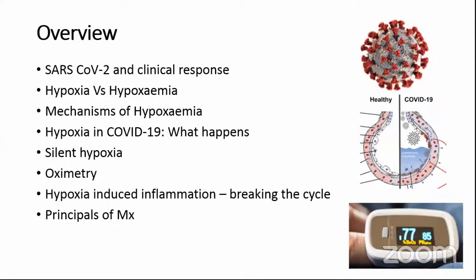Today we'll cover the mechanism of hypoxemia in COVID-19, why patients develop hypoxia, a bit about hyaline hypoxia — one of the most important topics discussed and one of the most important killers in COVID-19 patients. We'll also touch on the principle behind oximetry, hypoxia-induced inflammation, why hypoxia is dangerous, and finally some principles about management, though I won't go into detail on management.